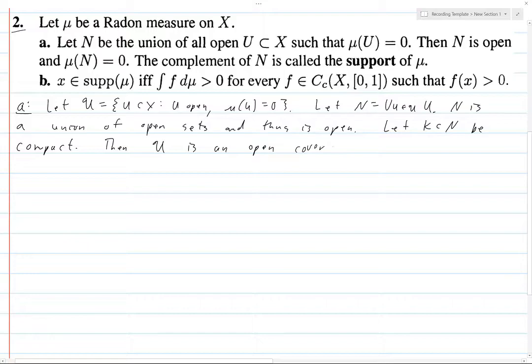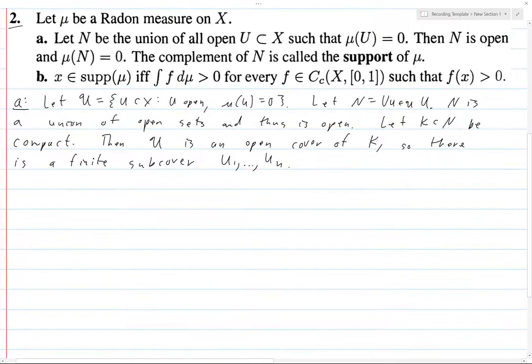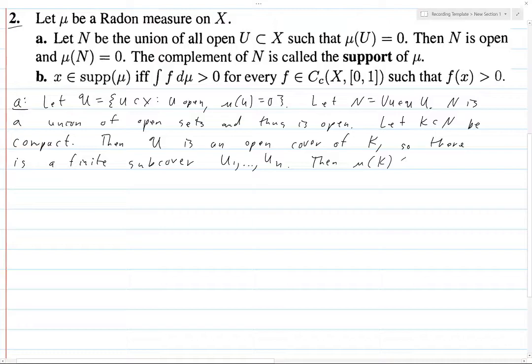In cover of K, so there is a finite subcover U1 through UN of K. Then, the measure of K is less than or equal to the union from 1 to N of the measure of the UJs. And this is certainly equal to 0 because it's a finite sum of things, finite sum of 0 over and over again.